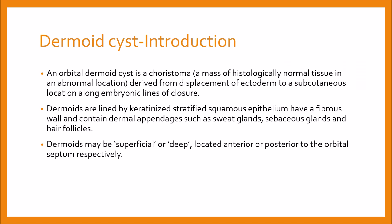Second is the dermoid cyst. An orbital dermoid cyst is a choristoma, which is a mass of histologically normal tissue in an abnormal location, derived from displacement of ectoderm into the subcutaneous location along the embryonic lines of closure. Dermoids are lined by keratinized stratified squamous epithelium like skin and have a fibrous wall containing dermal appendages such as sweat glands, sebaceous glands, and hair follicles. Epidermoid cysts do not contain adnexal structures.